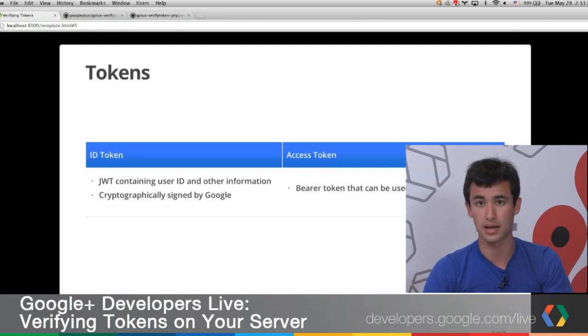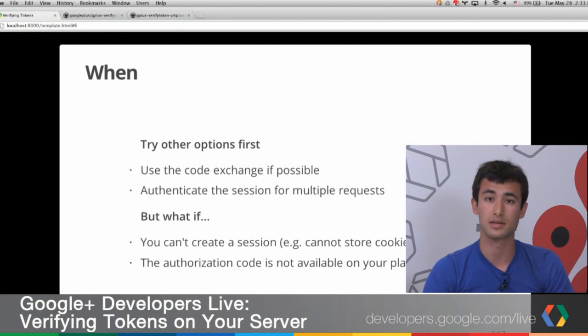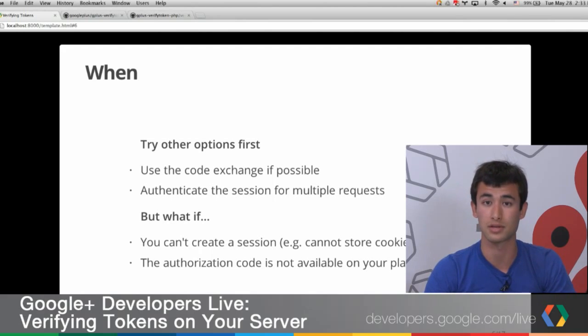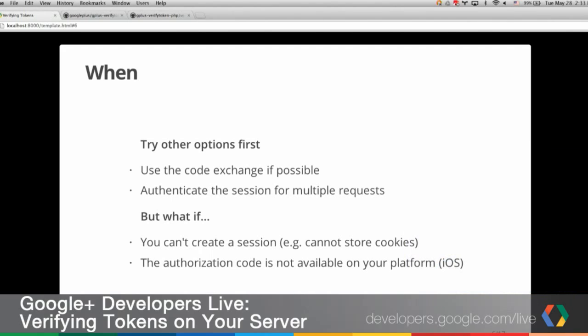You should use the one-time code flow instead of doing this first — it's preferred because it's more secure, since that code can't be intercepted, and it also gives you more power, which you can read about in our documentation. You should also try to authenticate a session so you can make multiple requests. In cases where you don't have a session, the solution we're presenting today will be relevant.